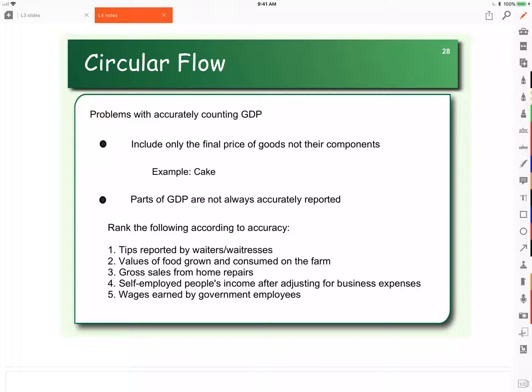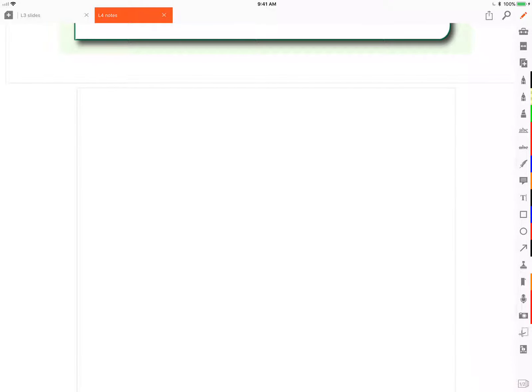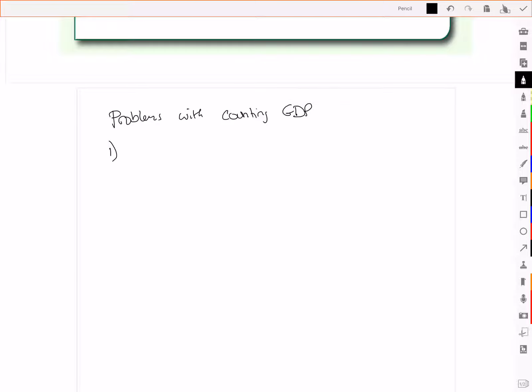All right, so let's actually just make a list. And this list is the problems with counting GDP. The first problem with counting GDP is that when we talk about gross domestic product, gross domestic product is the total value of all final goods and services. So GDP does not include intermediate goods.